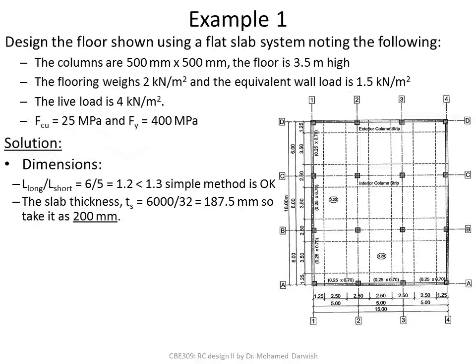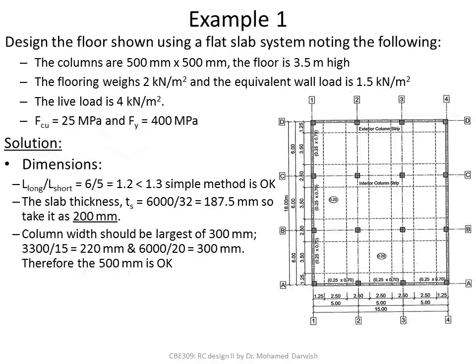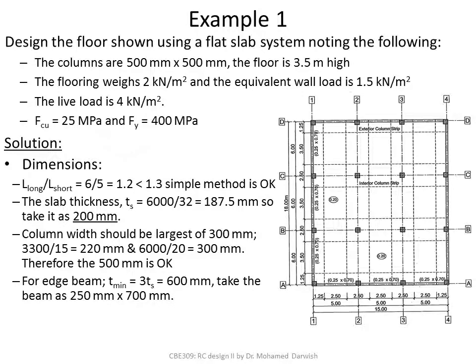The slab thickness is 6000/32 = 187.5 mm, so take 200 mm. The minimum column width should be the largest of 300 mm, 3300/15 = 220 mm (clear column height), and 6000/20 = 300 mm (bay dimension), so the 500 mm column is acceptable. The minimum edge beam depth is 3 × 200 = 600 mm, so the 700 mm edge beam depth is satisfactory.